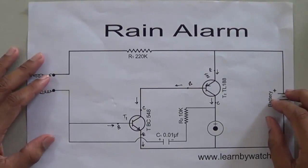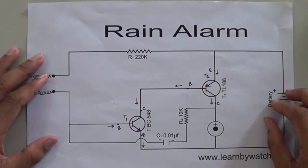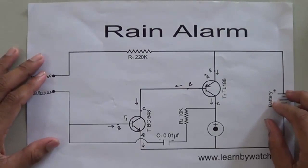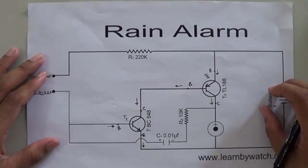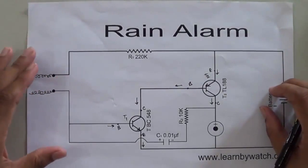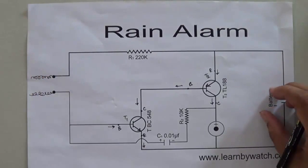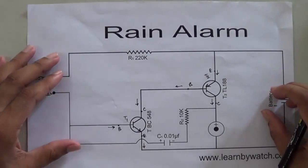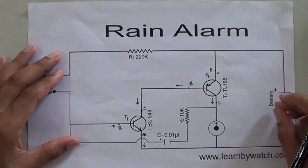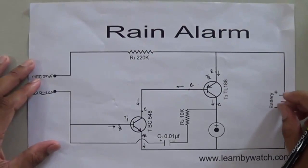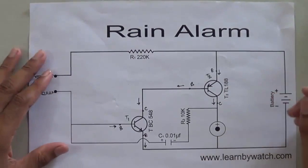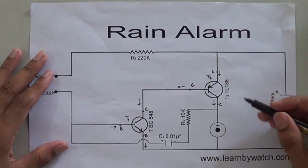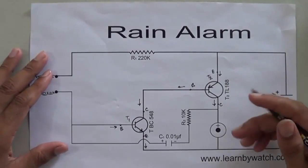Hello friends, in this video tutorial we will discuss about the rain alarm. This circuit is very important in home applications because sometimes rain starts outside and we don't come to know, and some important things or clothes get wet due to rain. With the help of this circuit we can prevent losses due to rain, so we can implement the circuit in our home.